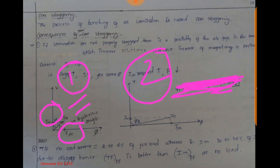Now take the second case where air gap is present, so that imu increases because the reluctance increases — to maintain the same flux, imu increases. Now i-naught increases. So if an air gap is introduced, i-naught increases. This is the first observation.